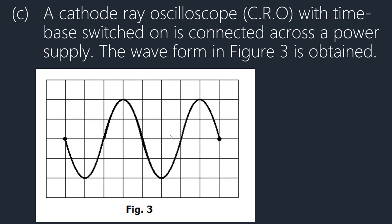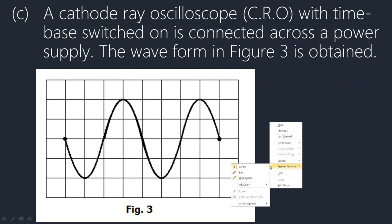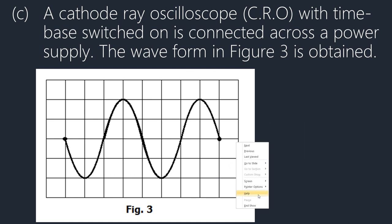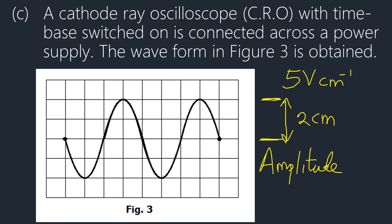Roman 2: find the amplitude of the voltage if the voltage gain is five volts per centimeter. Looking at the waveform, from the middle position to the peak is two centimeters. Therefore the amplitude is five volts per centimeter times two centimeters, giving us 10 volts. The amplitude is the same as the peak voltage. For peak-to-peak voltage, just multiply the peak voltage by two.